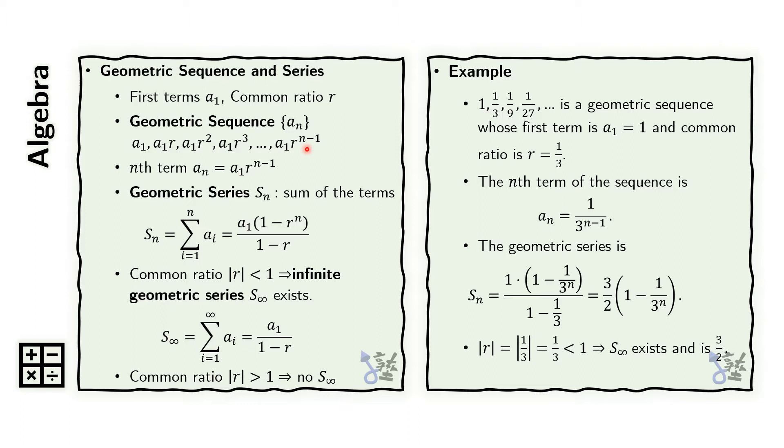In the geometric sequence or progression, the nth term can be obtained using this formula. The geometric series s sub n associated with a geometric progression or geometric sequence is the sum of the terms of the geometric sequence from the first term to the nth term.